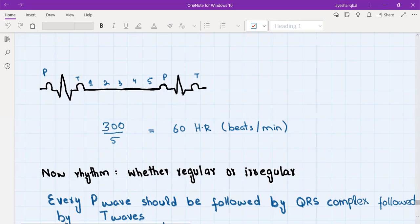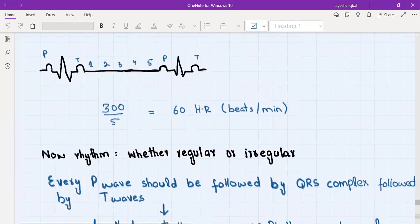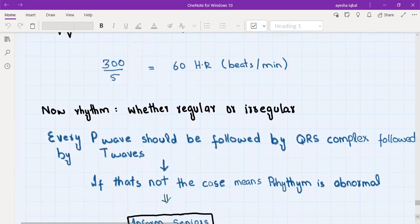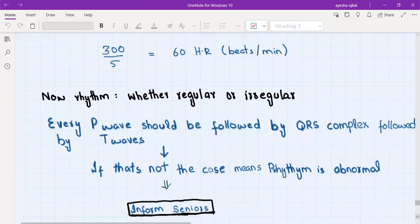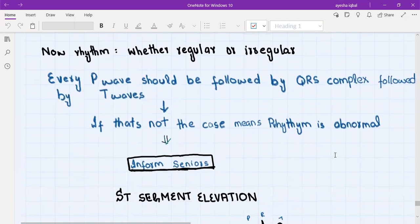Then we will go to the heart rhythm. We will ask the student whether they know how to tell whether the heart rhythm is regular or irregular. On every ECG, every P wave should be followed by QRS complex and the QRS complex should be followed by T waves. There is P wave followed by QRS complex and followed by T wave, and this pattern is repeated again and again. This is basically the characteristic of a regular heart rhythm. But if this is not the case then the heart rhythm is abnormal and we need to inform our seniors.